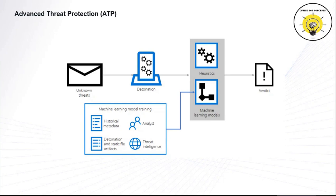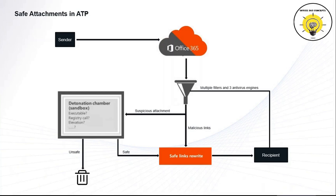Office 365 ATP protects customers from unknown email threats in real-time by using intelligent systems that inspect attachments and links for malicious contents. These automated systems include a robust detonation platform and machine learning models. Safe Attachments in Office 365 ATP provides an additional layer of protection for email attachments that have already been scanned by anti-malware protection policies.